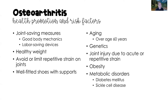We will see some joint deterioration as we age, and osteoarthritis is most common in adults over the age of 60 years. There is a genetic component to osteoarthritis, and joint injury due to acute or repetitive strain is a very common cause. Obesity is a risk factor for osteoarthritis, and other metabolic disorders such as diabetes mellitus and sickle cell disease also contribute to osteoarthritis.